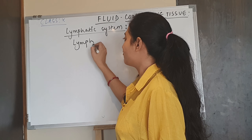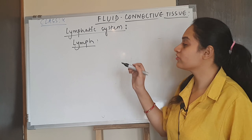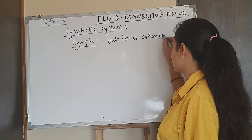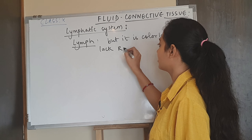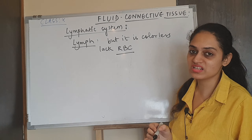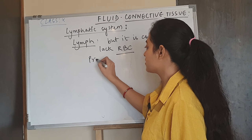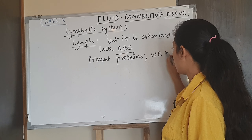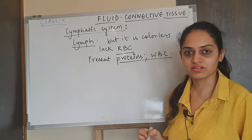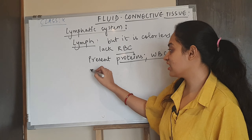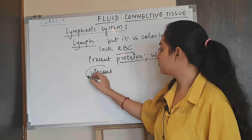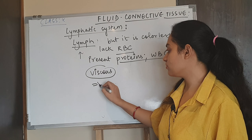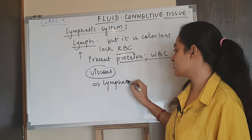Lymph is similar to blood in our body, but it is colorless because it lacks RBC, that is red blood cells. What is present in lymph are proteins and WBCs. This fluid is a very viscous fluid and we call it lymph.